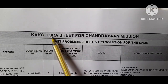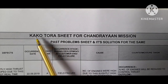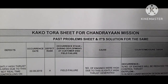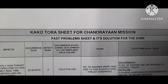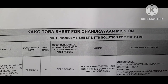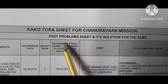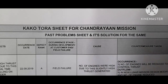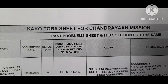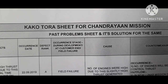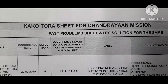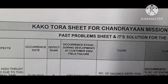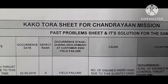Kako means past, and Tora means problems or trouble. So 'past problems.' Kako Tora is a data sheet which maintains past problems as well as their solutions. Kako Tora means past problems maintained in a data sheet along with their solutions. Kako Tora is a Japanese methodology; its other meaning is 'what is learned from past problems.'